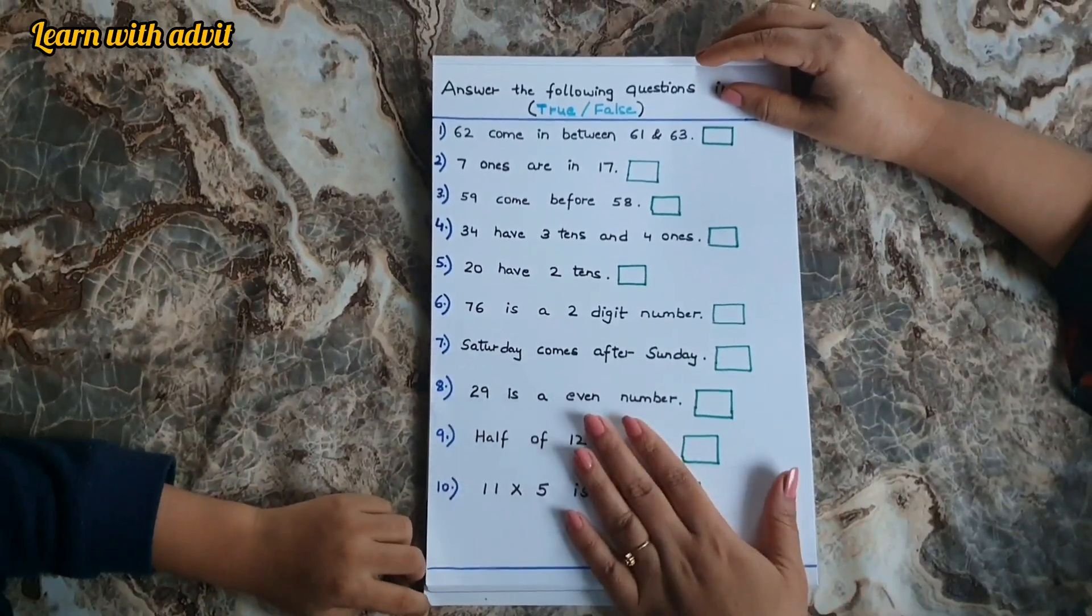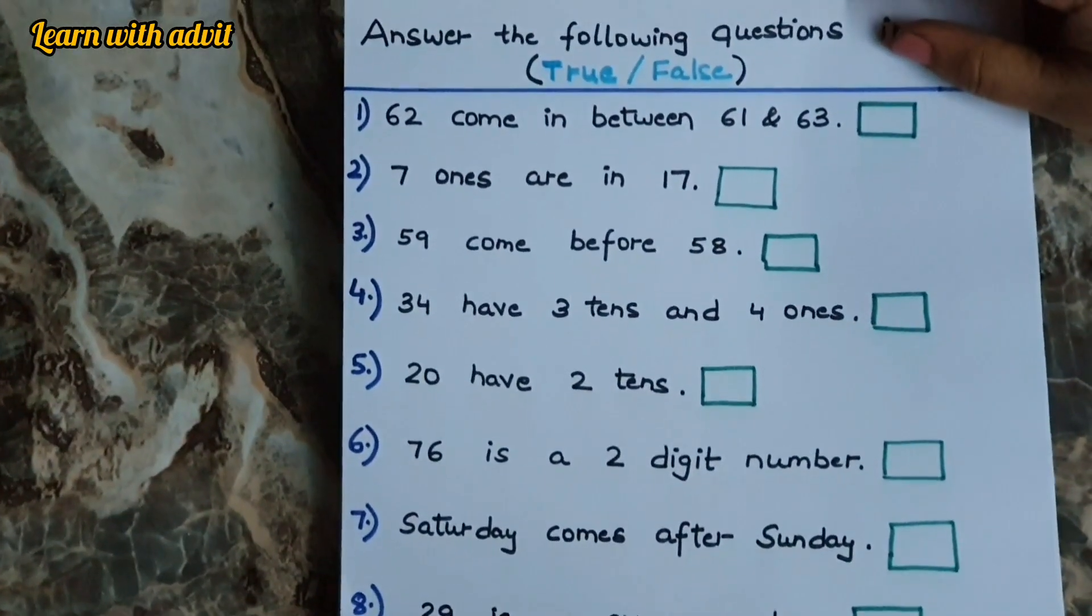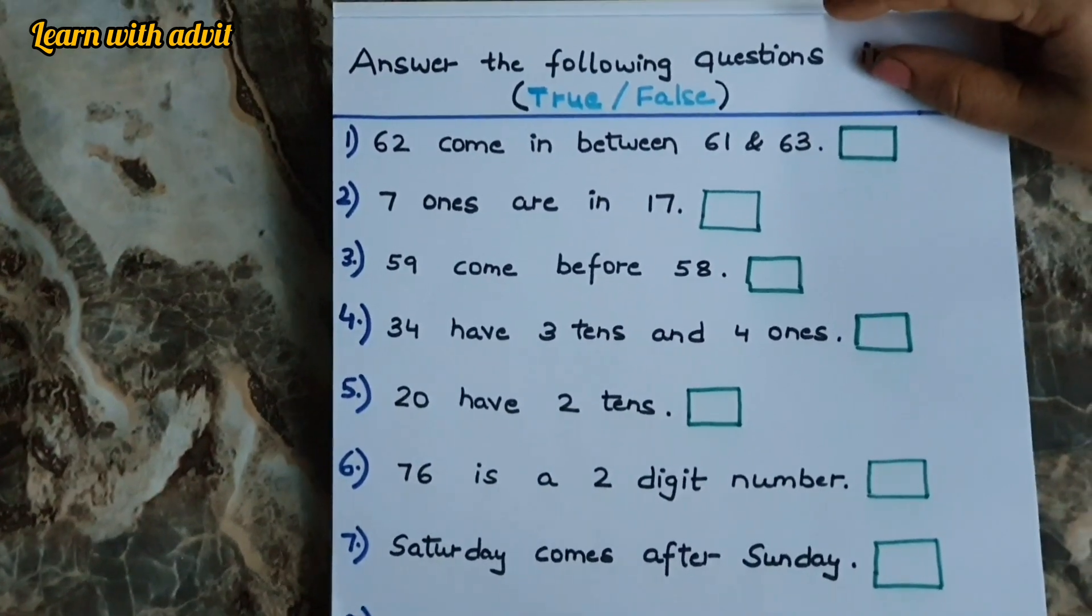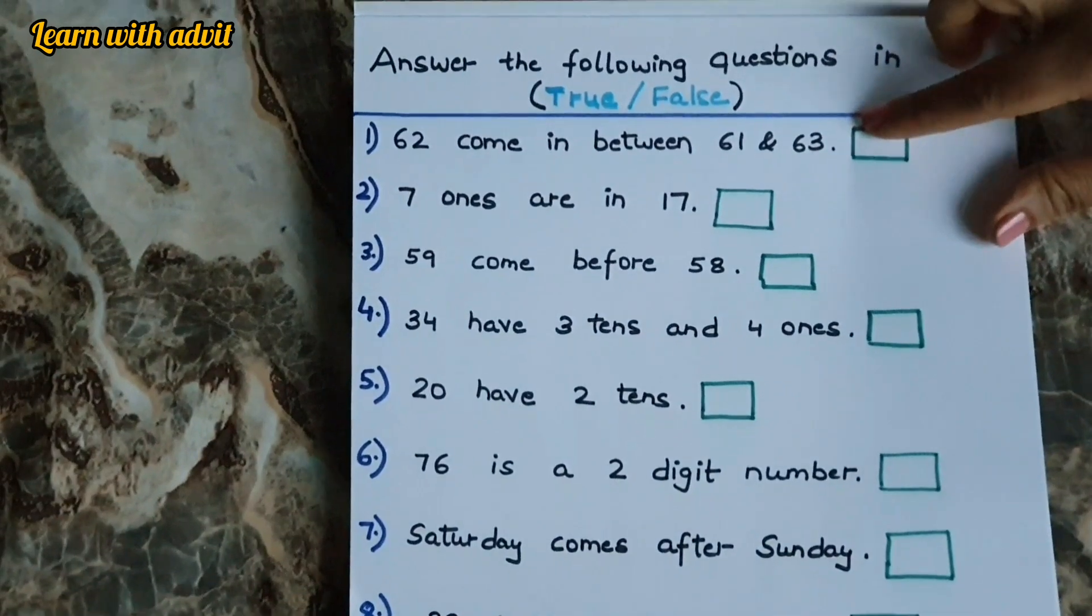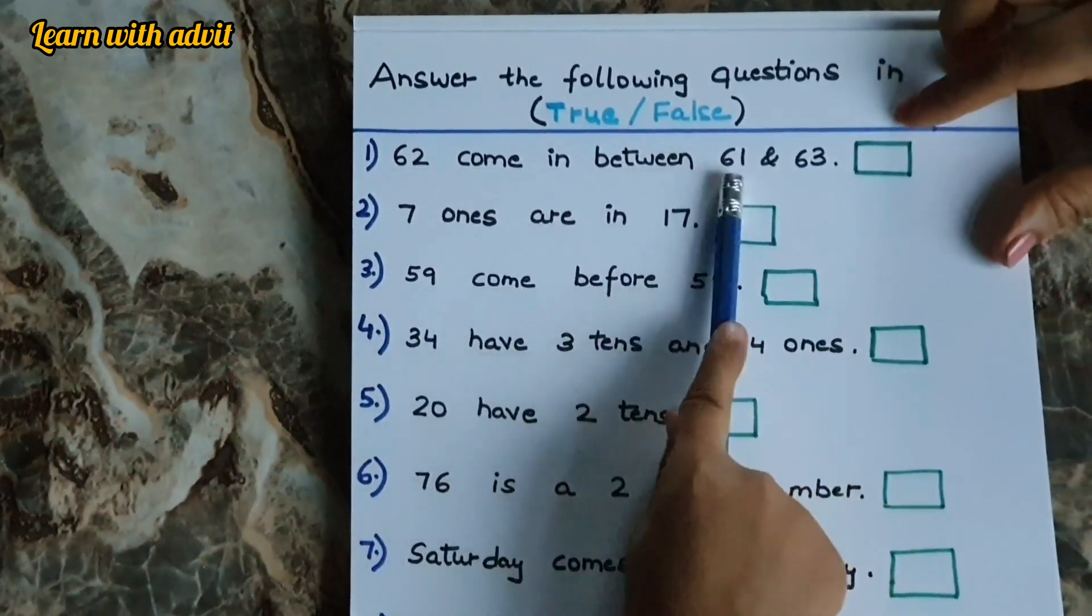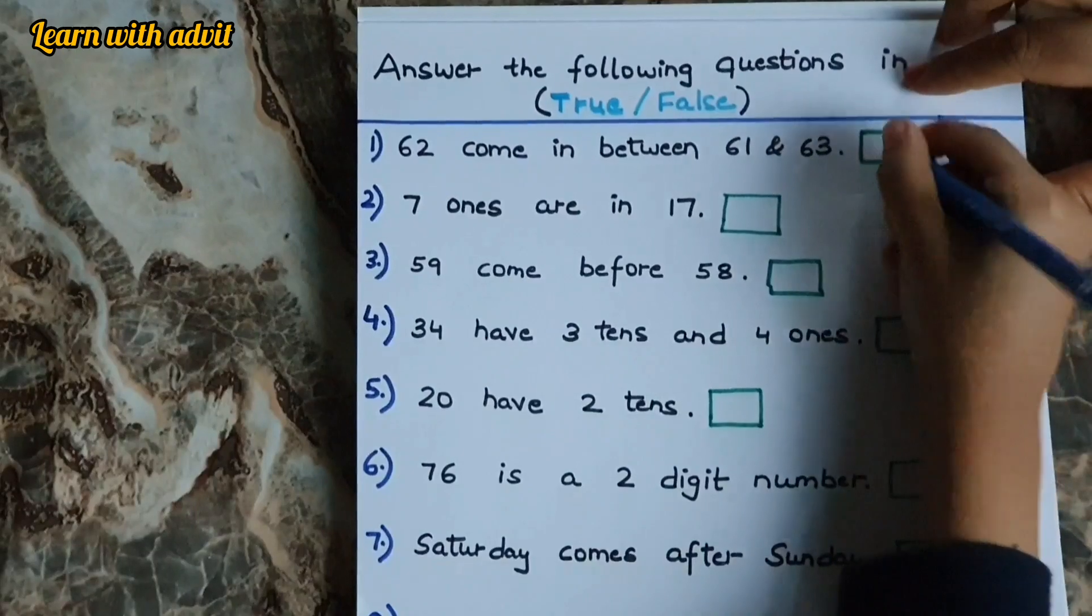Answer the following questions. True or false. For true, you have to write T. And for false, you have to write F. 62 comes in between 61 and 63. Yes. 61, 62, 63. Write it down.